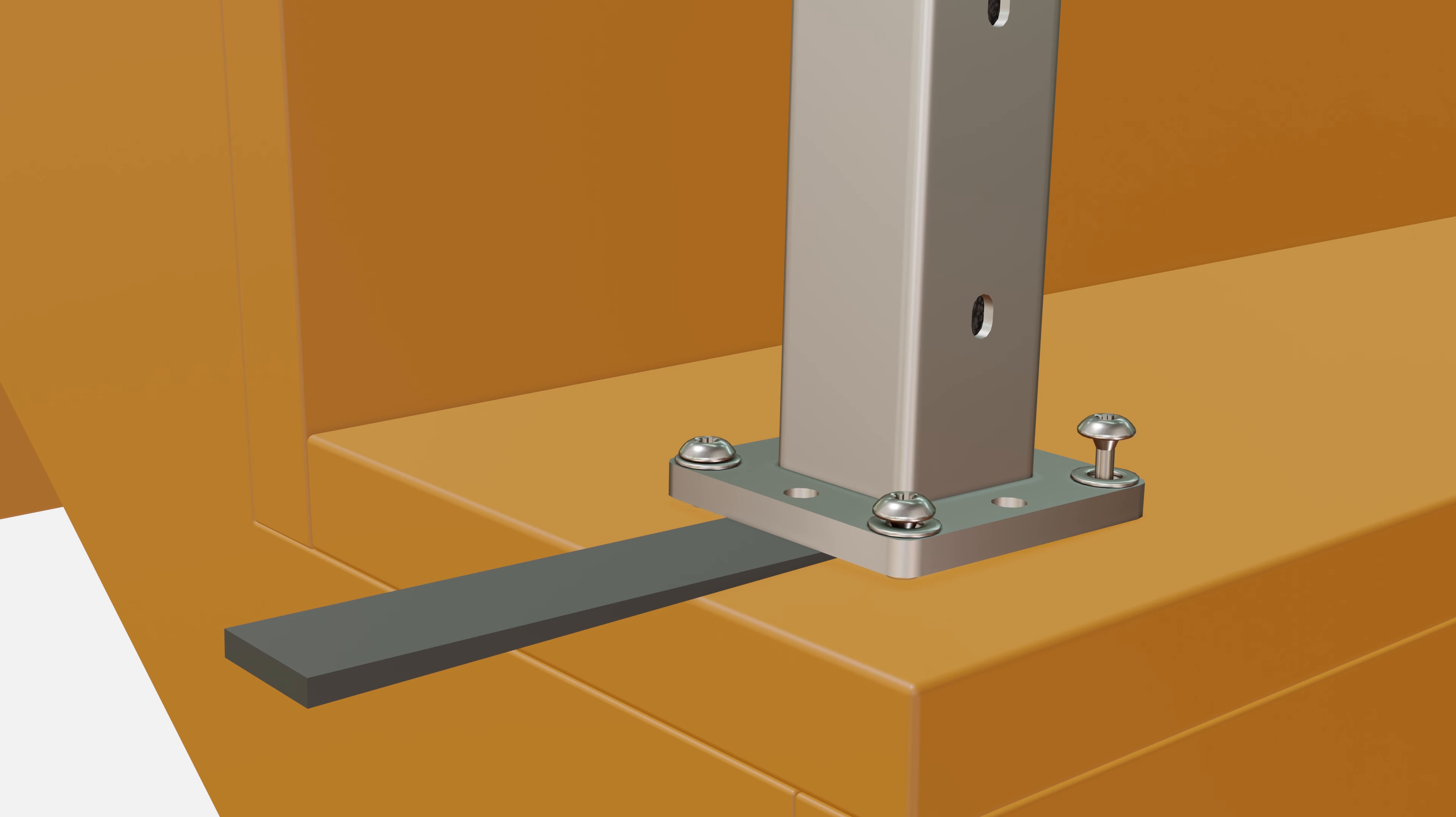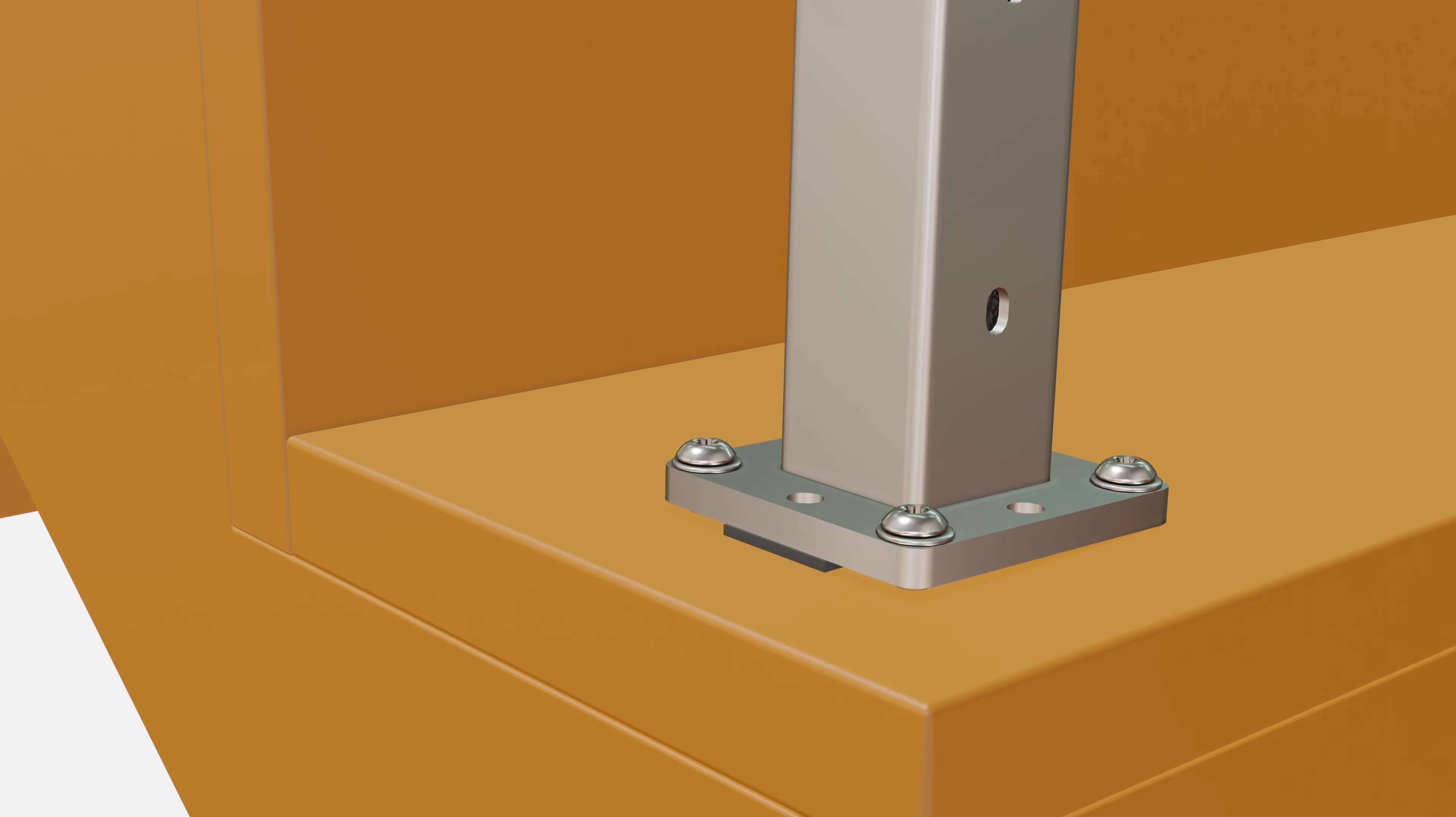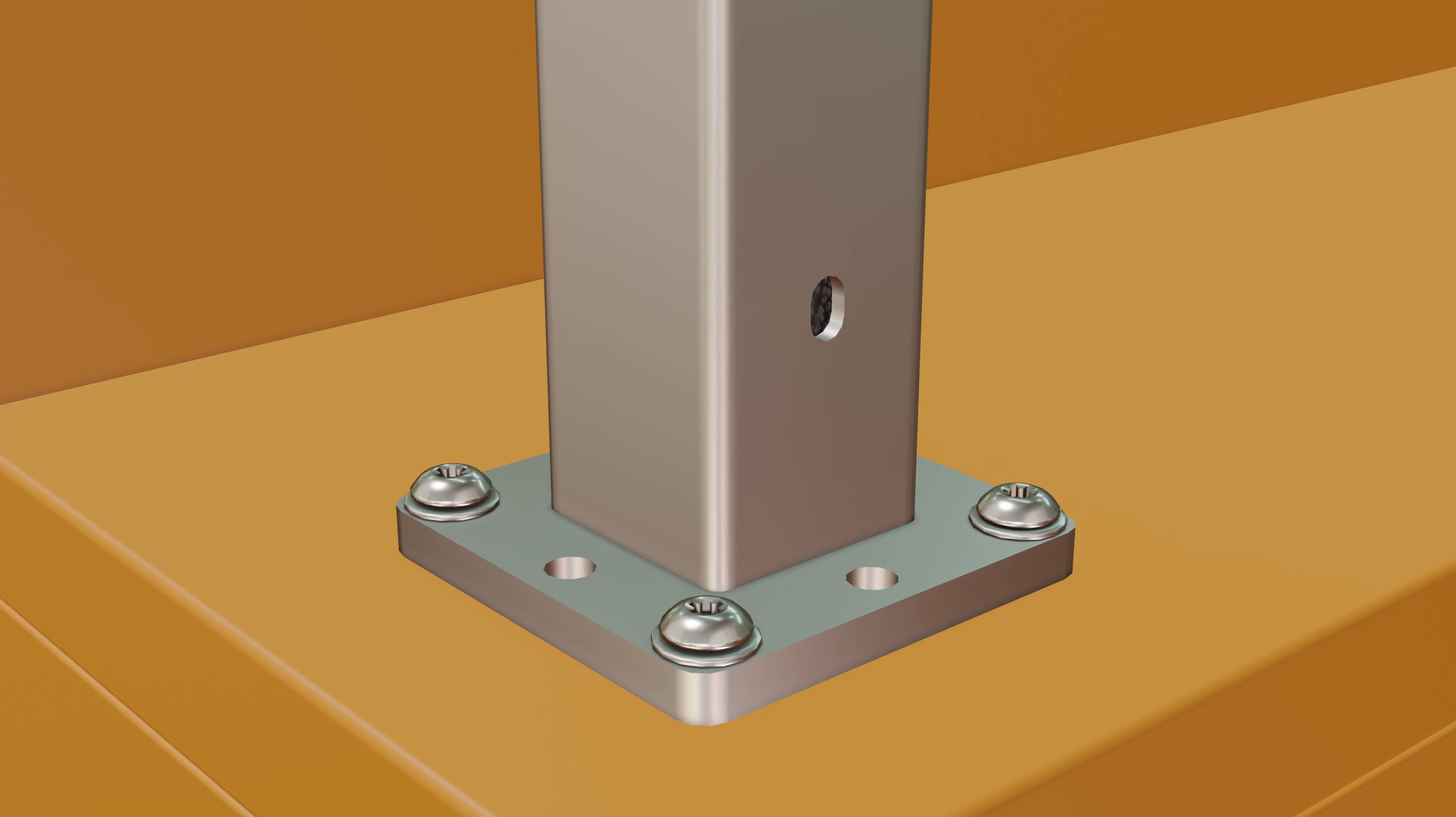The screws will pull the post down and slightly compress the shim, so take your time on this step and recheck your level after each tightening sequence. If the shim does not break close to the post, use an oscillating tool to cut it near the post.